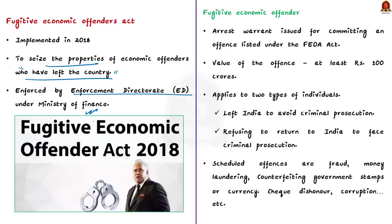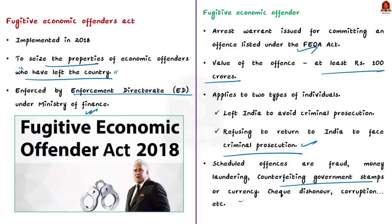Now, who are classified as Fugitive Economic Offenders? A person against whom an arrest warrant has been issued for committing an offense listed in this act is called a Fugitive Economic Offender. The value of the offense should be at least rupees 100 crores. This applies to two types of individuals: those who have left India to avoid criminal prosecution, and those who are refusing to return to India to face criminal prosecution. The scheduled offenses listed under this act include fraud, money laundering, counterfeiting government stamps or currencies, check dishonour, corruption, etc.